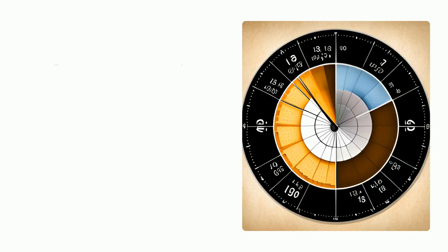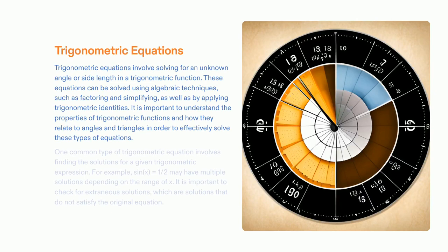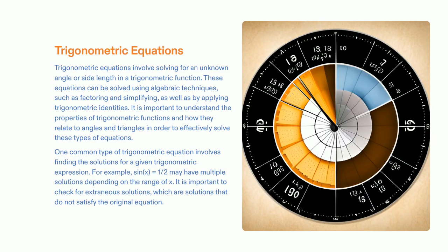Solving trigonometric equations requires knowledge of sine, cosine, and tangent to calculate lengths and angles in a triangle. To solve these equations, one needs to be able to apply algebraic techniques, such as factoring and simplifying, as well as trigonometric identities. It is important to understand the properties of trigonometric functions and how they are related to angles and triangles.